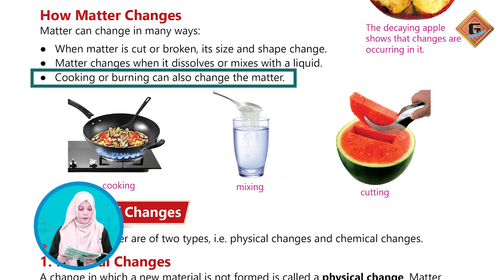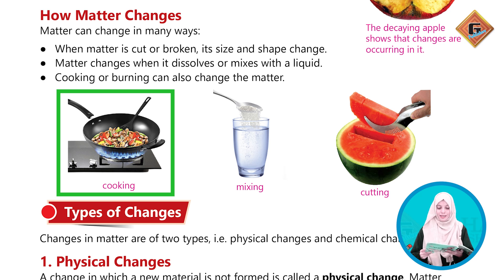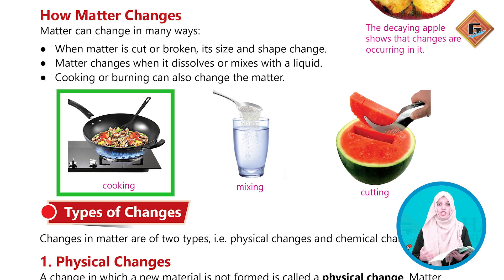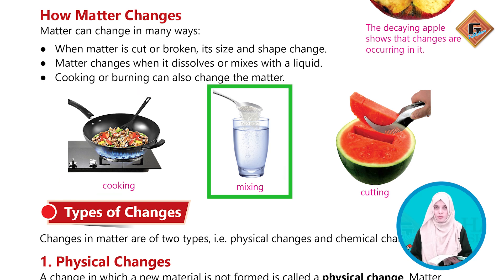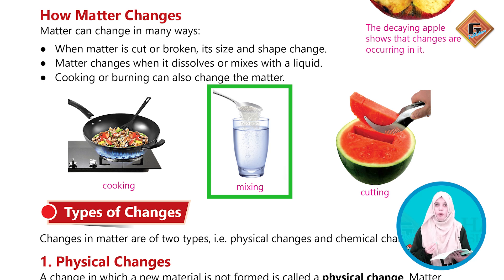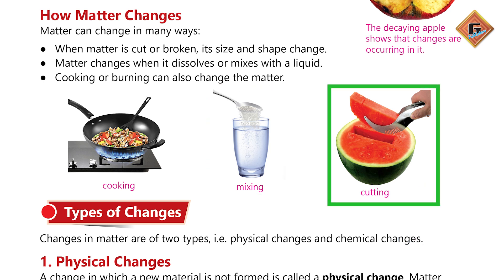یہاں پر picture بنی ہوئی ہے — ایک stove ہے جس کے اوپر کچھ material cook ہو رہا ہے۔ جب وہ material cook ہوگا تو اس کی shape، color اور size change ہو جائے گا۔ اس کے بعد ایک glass of water ہے جس کے اندر sugar mix ہو رہی ہے — جب sugar کو water میں ڈالیں گے تو وہ totally dissolve ہو جائے گی اور اپنی shape change کر لے گی۔ اس کے ساتھ ایک watermelon ہے جو circular shape میں تھا جسے half semi-circle shape میں cut کر لیا گیا۔